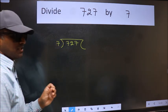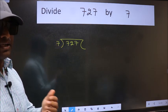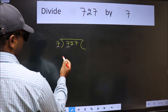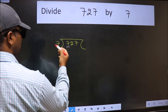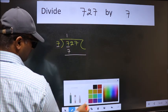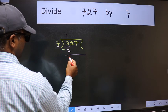This is your step 1. Next, here we have 7 and here 7. When do we get 7 in 7 table? 7 once is 7. Now we should subtract. We get 0.